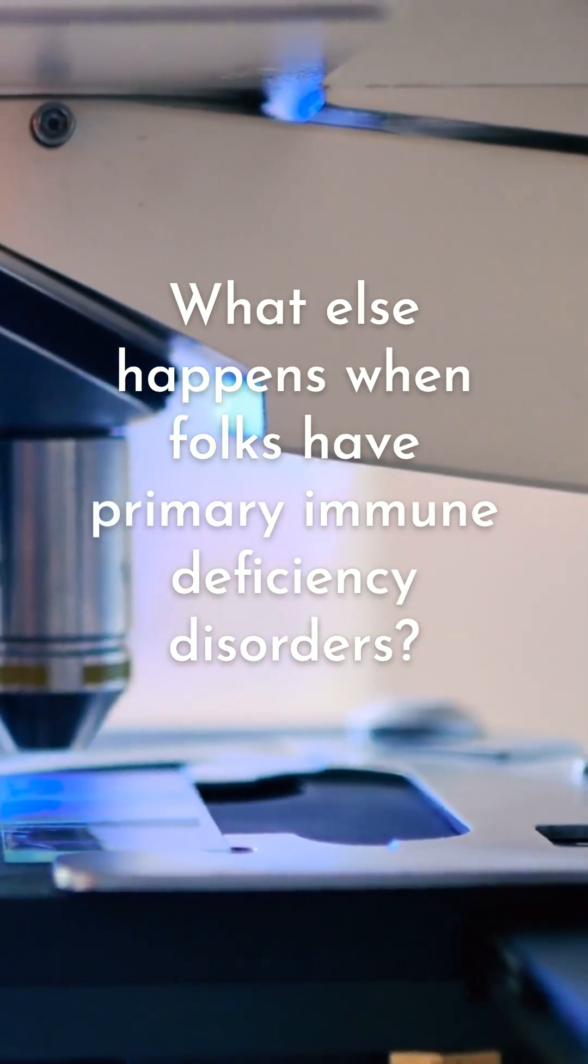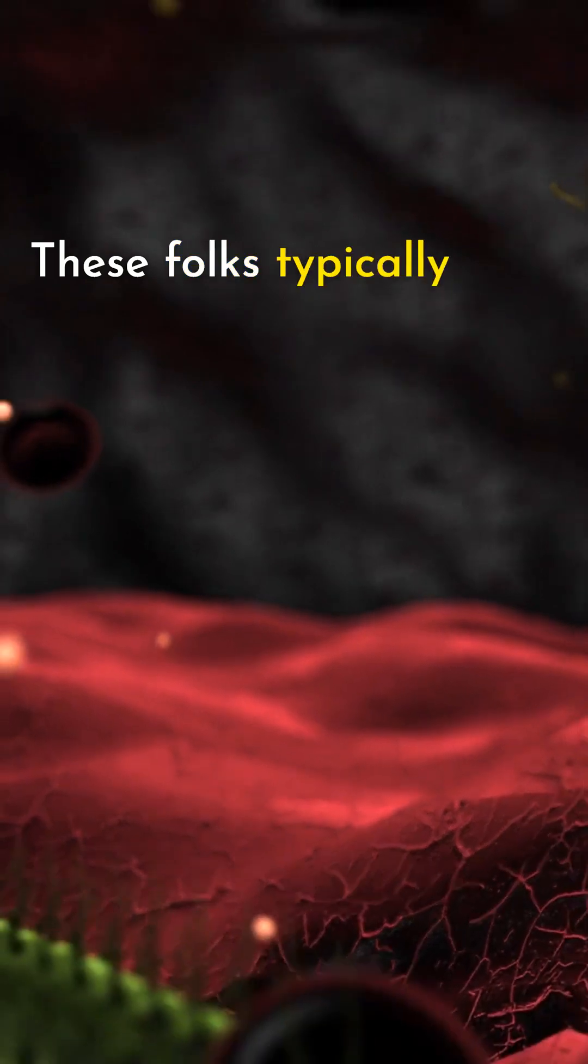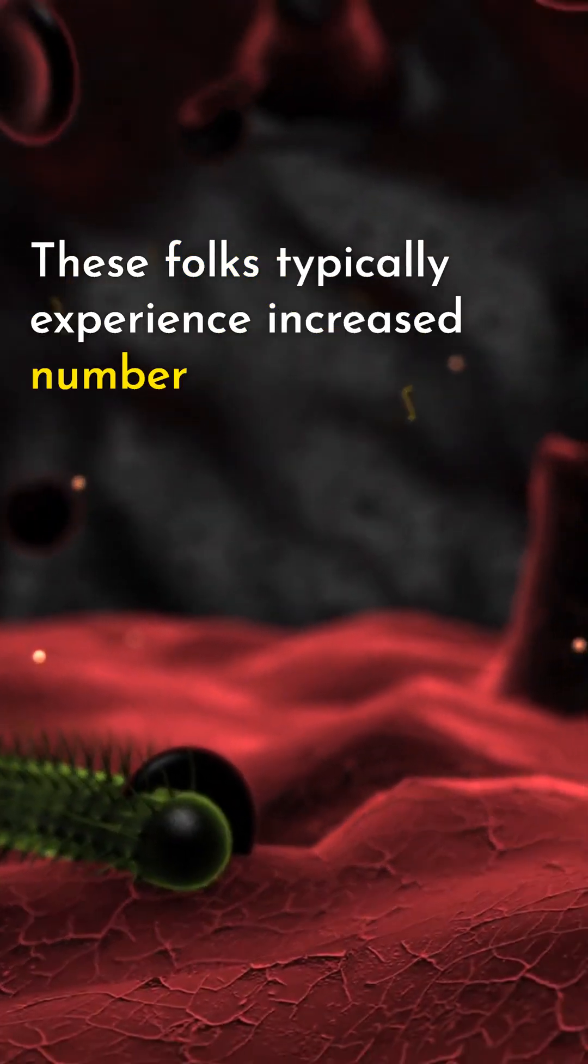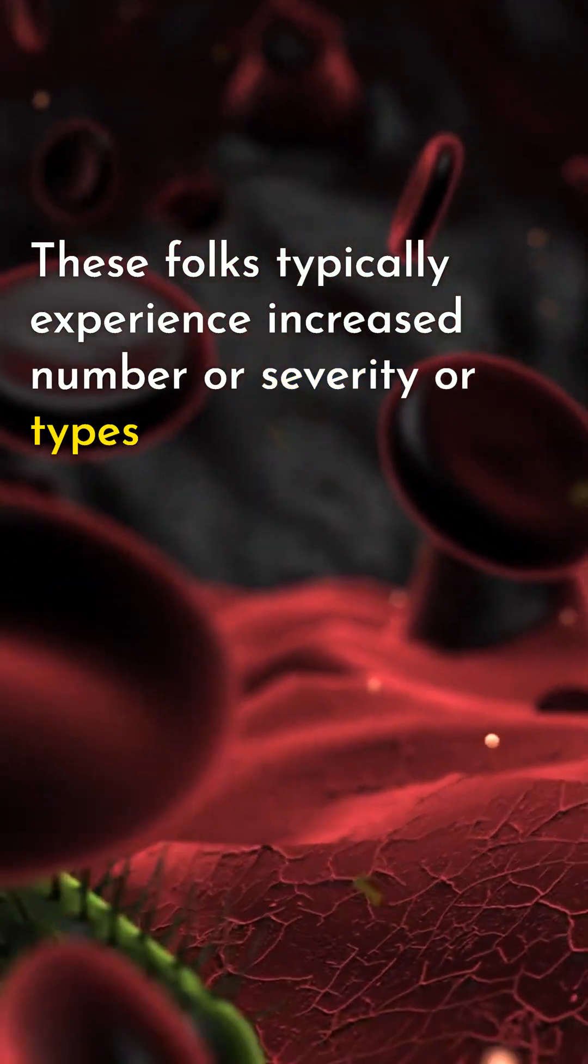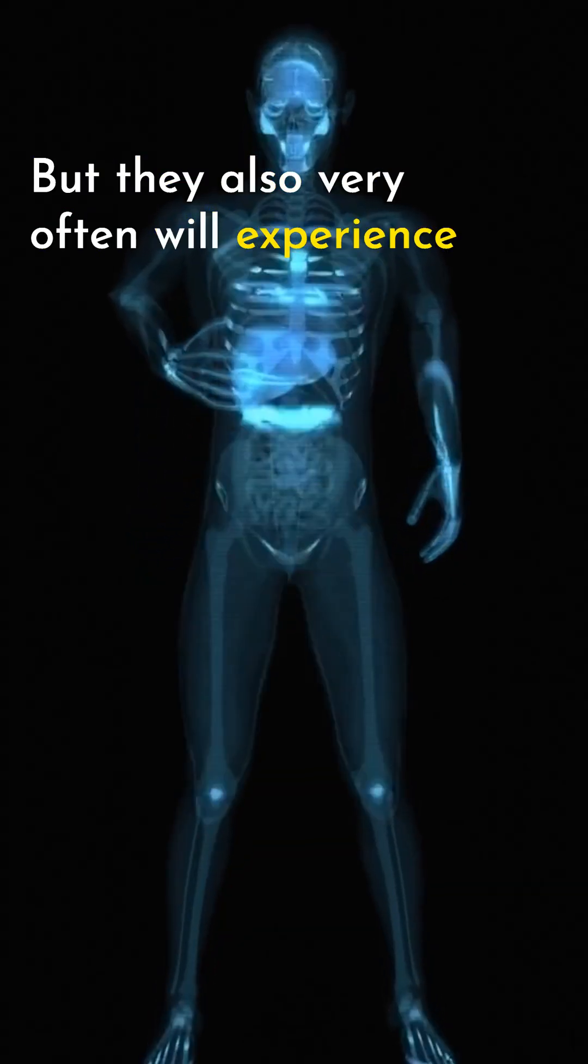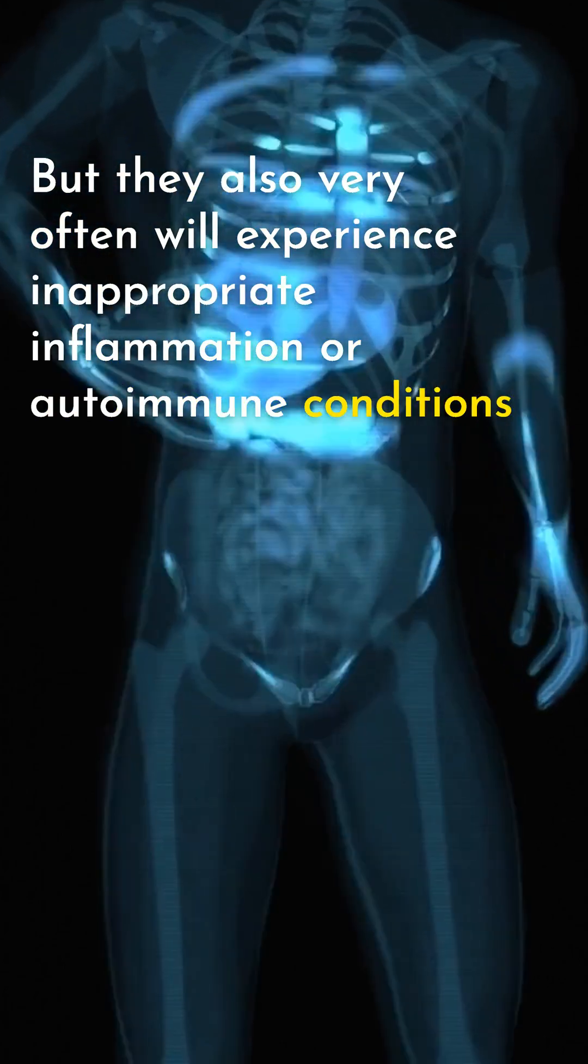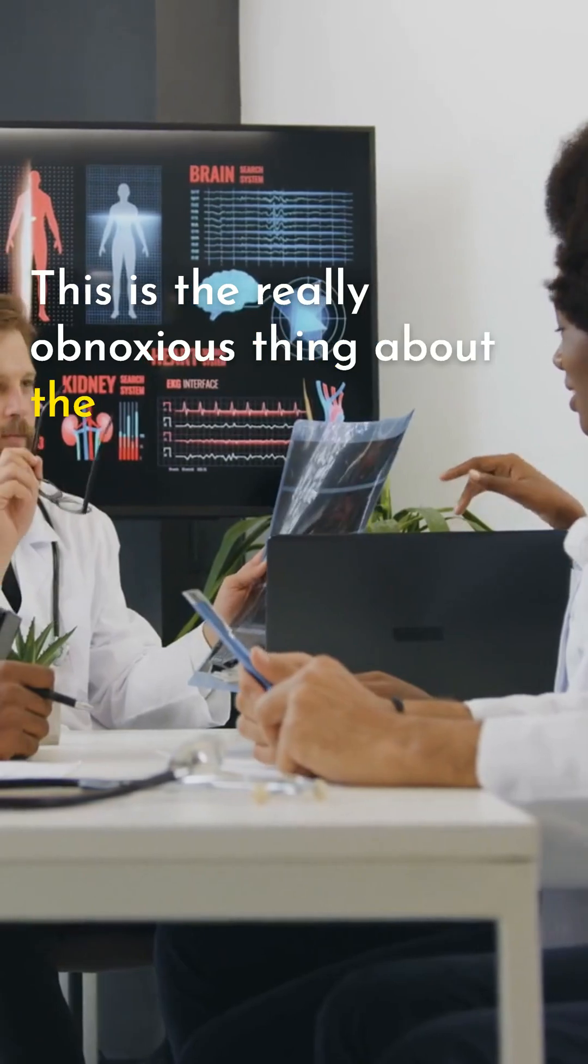What else happens when folks have primary immune deficiency disorders? These folks typically experience increased number or severity or types of infections, but they also very often will experience inappropriate inflammation or autoimmune conditions along with their immune deficiency. This is the really obnoxious thing about the immune system.